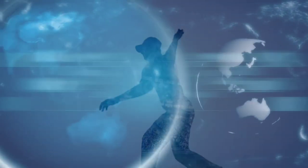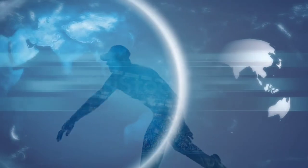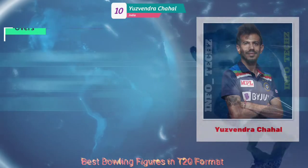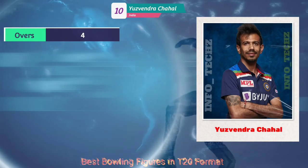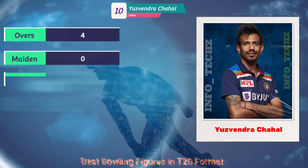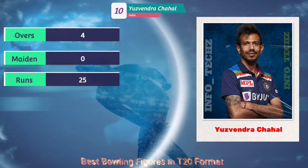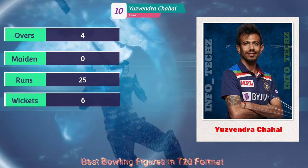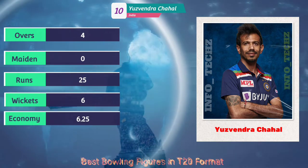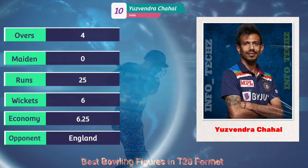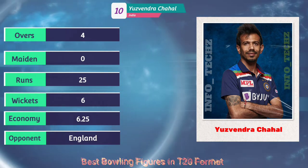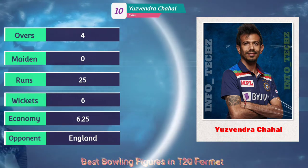At number 10, he is Yuzvendra Chahal from India — four overs, no maiden, 25 runs, and six wickets taken, with an economy of 6.25 against England. He is at number 10.